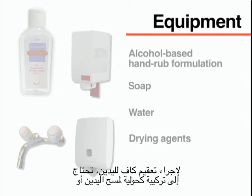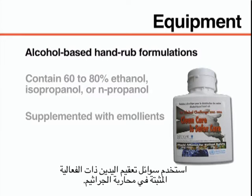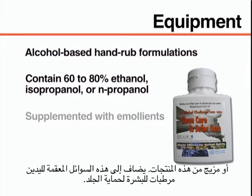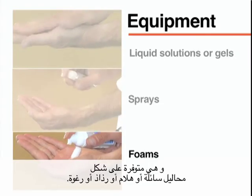To perform adequate hand hygiene, you will need an alcohol-based hand rub formulation or soap, water, and drying agents such as disposable paper or cloth towels. Use alcohol-based hand rubs with proven antimicrobial efficacy. These usually contain 60–80% ethanol, isopropanol, or n-propanol, or a combination of these products. These hand rubs are supplemented with emollients to protect the skin. They are available as liquid solutions, gels, sprays, or foams.